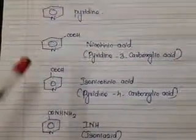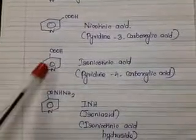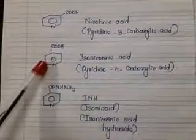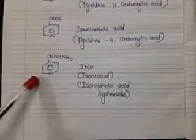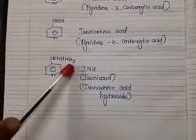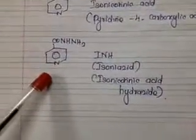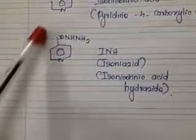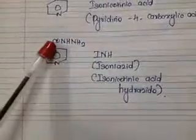Isonicotinic acid combines with hydrazine, that is NH2-NH2, and we get isonicotinic acid hydrazide. The structure of isoniazid is a pyridine ring with CO-NH-NH2 in the fourth portion. This is a derivative of isonicotinic acid, so this is an acid hydrazide.